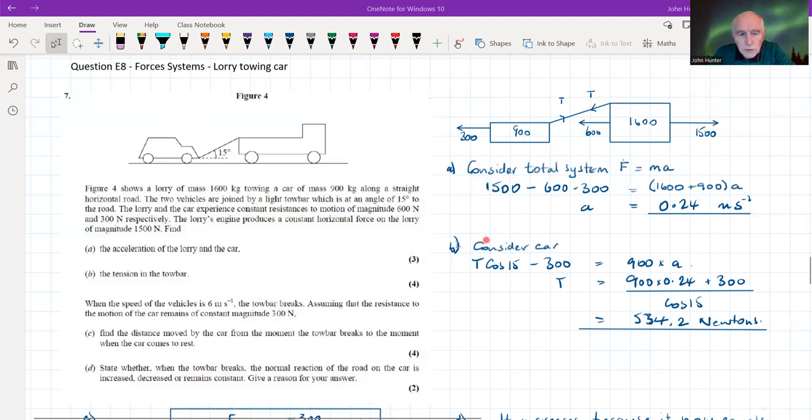We've got 1600 kilograms here. There's a forward force of 1500 newtons, and each of them experience resistances of 600 and 300 newtons respectively. This force could be friction, it could include wind resistance and so on.